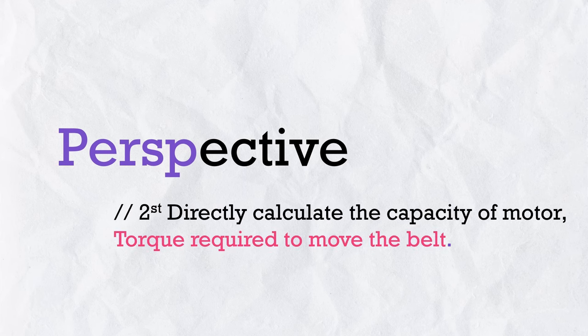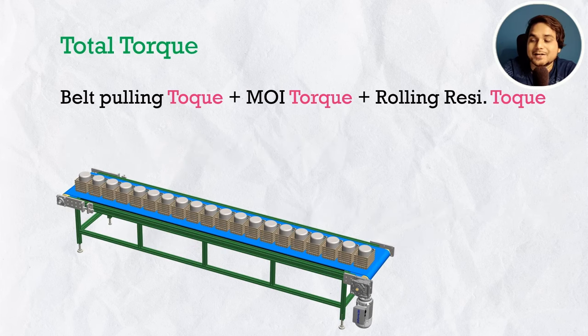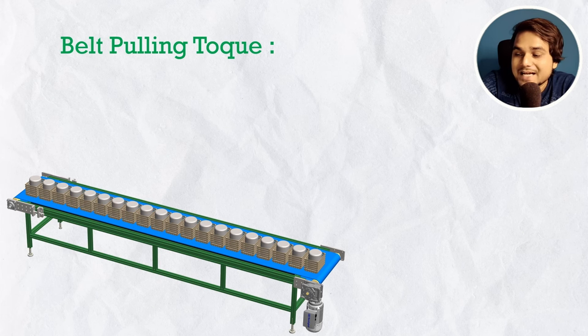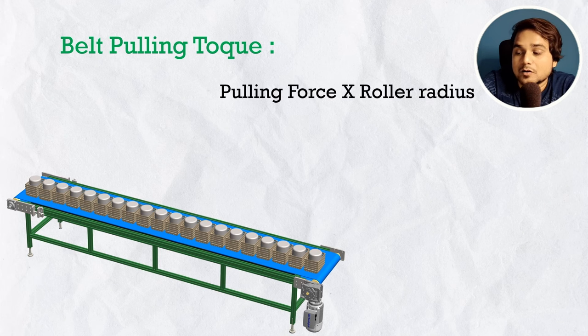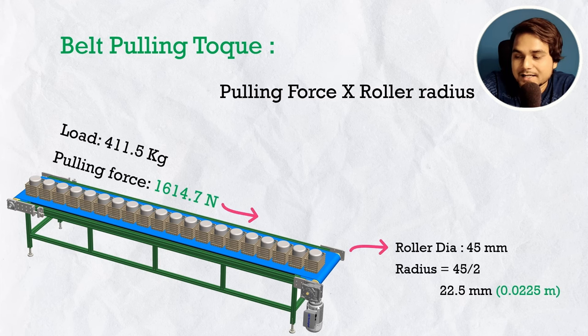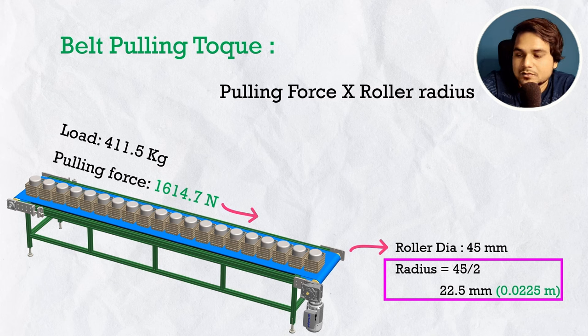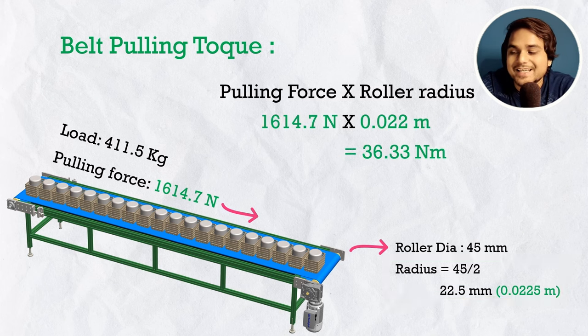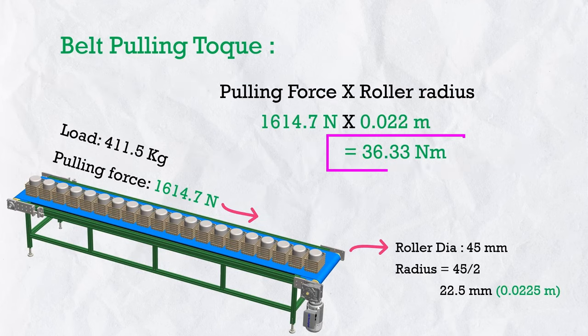So let's use the second perspective and directly calculate the required torque. Total required torque = belt pulling torque + moment of inertia torque + a safety factor for belt rolling resistance. First, belt pulling (load) torque: torque = pulling force × driving roller radius = 1614.7 × 0.0225 = 36.3 N·m. Interestingly, this matches the result from the first perspective — as it should.